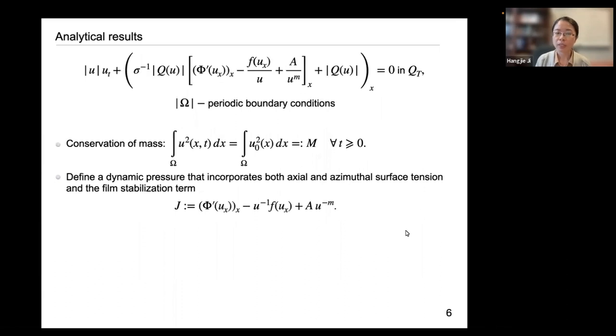The PDE itself has some nice properties, such as the conservation of mass. So this condition represents the fact that the liquid over the domain would contain a conserved mass over all time that we considered. And we would also like to define a dynamic pressure J that accounts for both the axial and azimuthal surface tension and a film stabilization term.